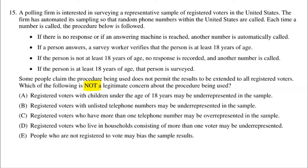Option A says registered voters with children under 18 may be underrepresented — that is a legitimate concern. If a child answers the phone and says they're not 18, the call ends, and the parent who has children under 18 may never be reached. Option B says registered voters with unlisted telephone numbers may be underrepresented. Typically we'd think that's a problem, but I'll come back to that — the answer is B, and I'll explain why.